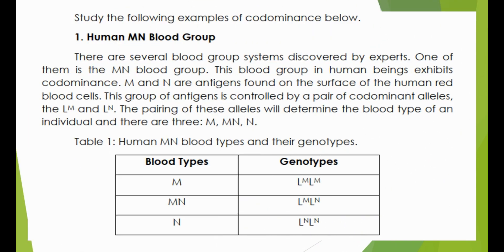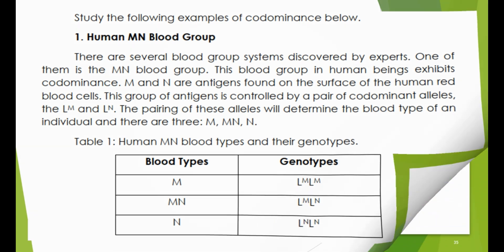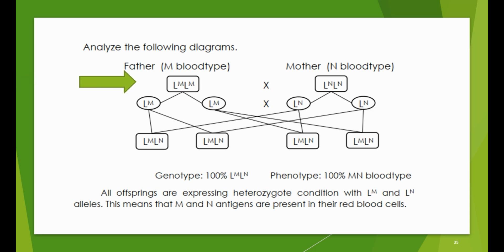Study the following examples of co-dominance. The human MN blood group is one of several blood group systems discovered by experts. This blood group exhibits co-dominance — M and N are antigens found on the surface of human red blood cells, controlled by a pair of co-dominant alleles, LM and LN. The pairing of these alleles determines the blood type of an individual, and there are three types: M, MN, and N. For example, a father with blood type M (homozygous gametes LM LM) and a mother with blood type N (NN) will produce 100% offspring with MN blood type.